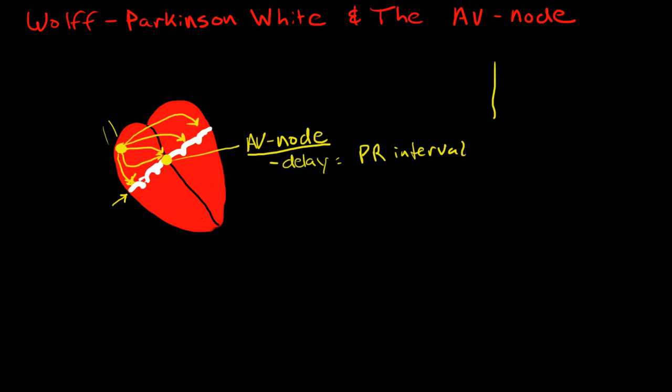Remember the PR interval is here. I'm just going to draw a normal EKG wave here. So, we're here at the isoelectric line. We have a P wave that represents atrial depolarization. Then there is a slight delay, and then there is a QRS complex, and then the T wave that represents ventricular depolarization. This interval between the P wave and the beginning of the QRS complex is called the PR interval.